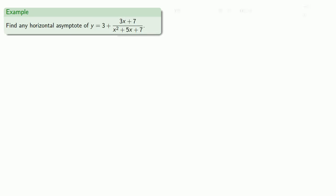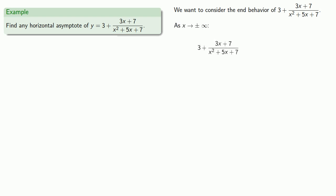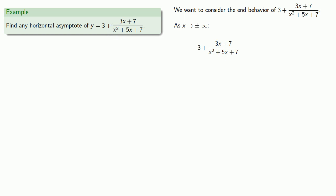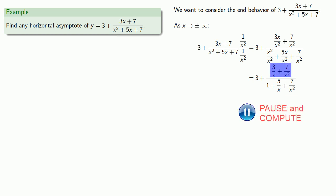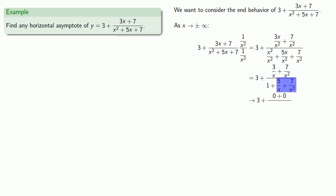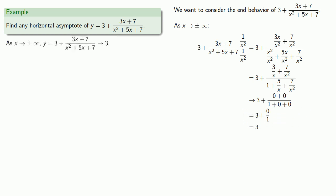How about something like this? We want to consider the end behavior of the function 3 plus 3x plus 7 over x squared plus 5x plus 7, and know what happens as x goes to plus or minus infinity. We divide numerator and denominator by the highest power of x in the denominator, which is x squared — so we multiply by 1 over x squared. As x goes to infinity, 3 over x and 7 over x squared go to 0, and 5 over x and 7 over x squared go to 0 as well. So our expression goes to 3, meaning y equals 3 is a horizontal asymptote.